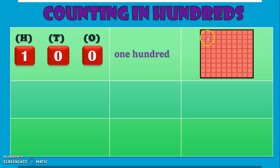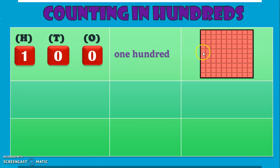Here, let us see if there are 10 tens. Counting: 1, 2, 3, 4, 5, 6, 7, 8, 9, 10. This is your first group of 10. Similarly, you have your second group of 10, third, fourth, fifth, sixth, seventh, eighth, ninth, and tenth. So we have 10 groups of 10s making 100.